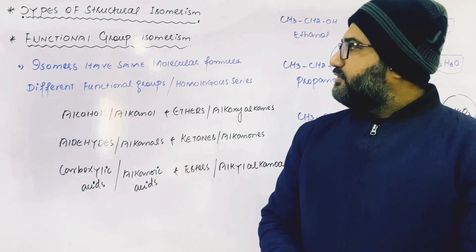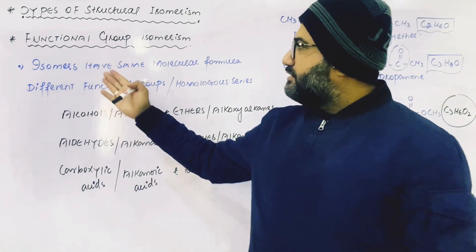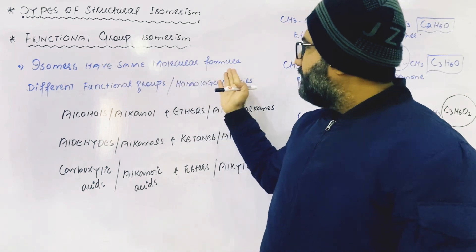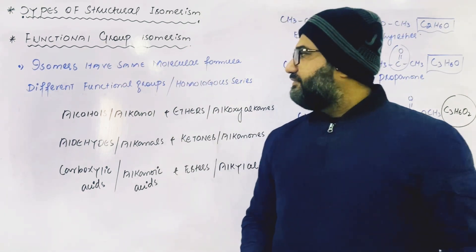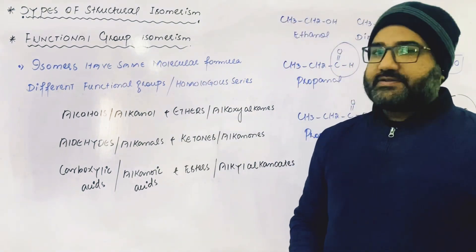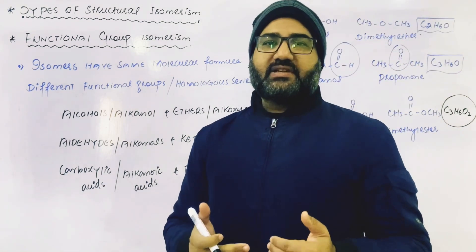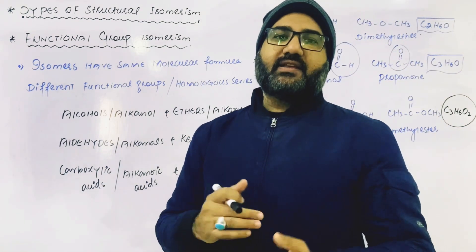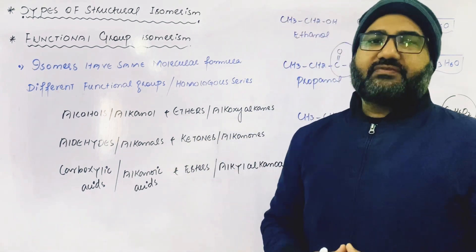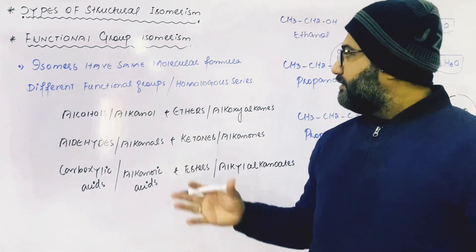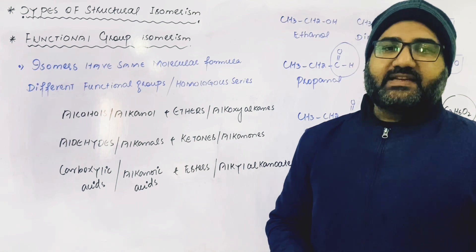Functional group isomerism is the next type in which isomers have the same molecular formula but they have different functional groups. So the molecular formula or composition of the isomers is the same, but they have different functional groups, and because they have different functional groups, they will belong to different homologous series as well.